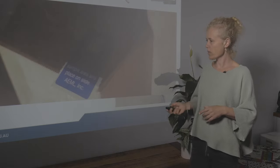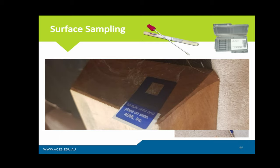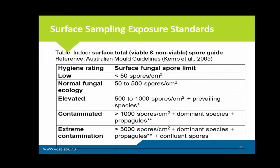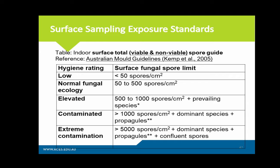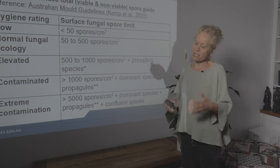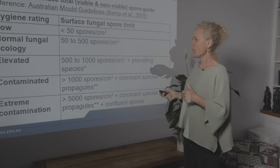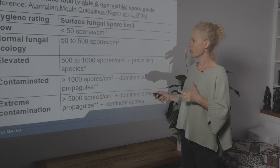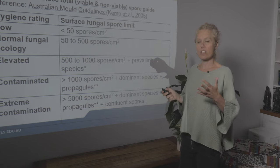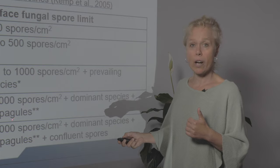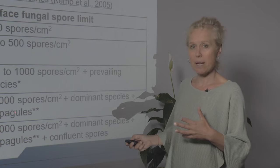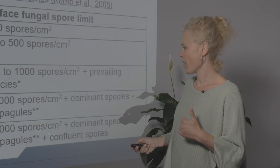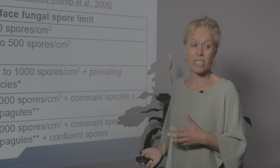Here's an example of a surface sample using a biotape, picking up what's on that surface. For surface sample exposure guidelines, I like the Australian mould guidelines: low is less than 50 spores, and normal fungal ecology is up to 500. The main thing is you don't want to see water damage moulds — Aspergillus, Penicillium, Cladosporium, Chaetomium, Stachybotrys. Anything up to 500 with speciation of water damage moulds is a problem. If you have propagules like hyphae at high levels, there's actual growth. Anything above 1,000 is a contaminated surface needing remediation; above 5,000 with pathogenic fungi and high conidia phores or hyphae is extreme.